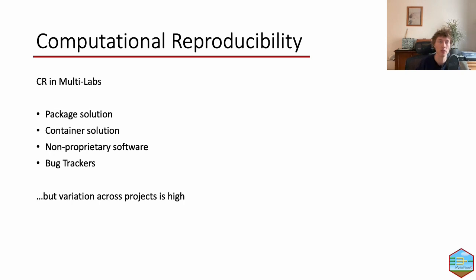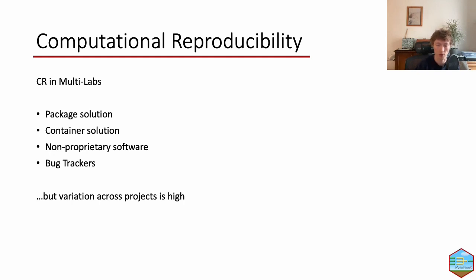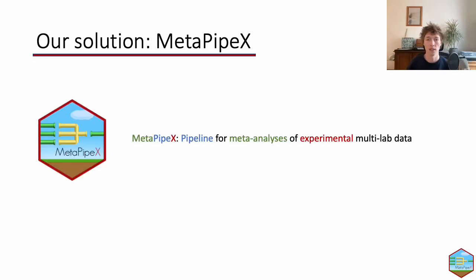Some of these best practices were already implemented in some of the multi-labs. For example, Many Labs 2 found a package solution for their data transformations, and there were container solutions and a lot of non-proprietary software used, as well as bug trackers — which are great for making sure that the community interacting with those projects is visible and errors or deviations are logged. But this is very inconsistent across these projects.